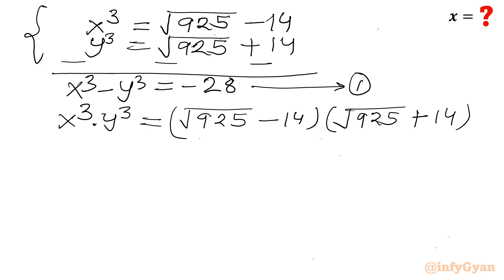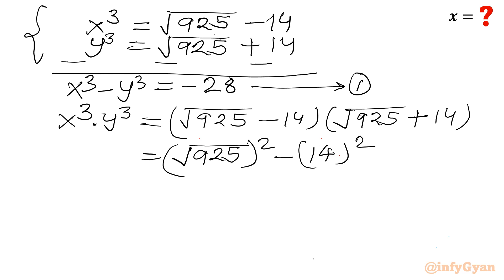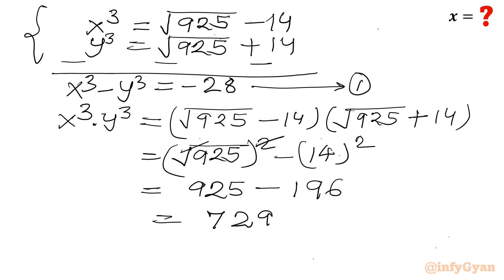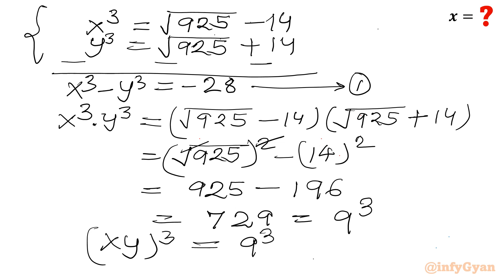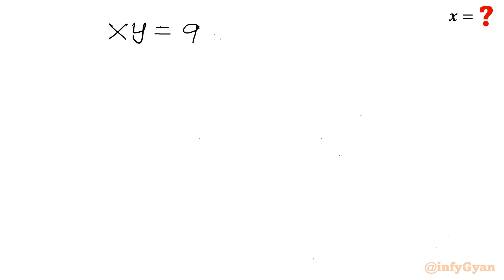This is of the form (a − b)(a + b), the difference of two squares. So it equals (√925)² − 14² = 925 − 196 = 729, which is 9³. So on the left-hand side we have (xy)³ = 9³, and taking cube roots of both sides gives xy = 9.